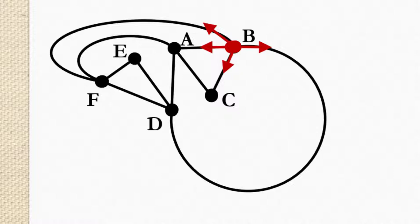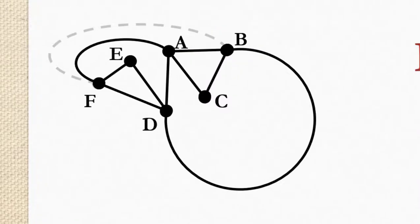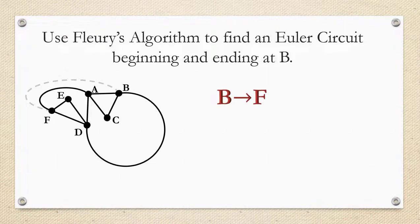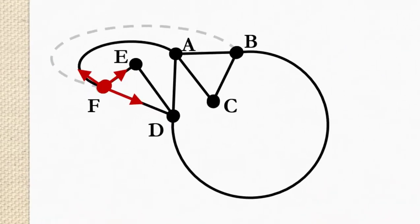So we're going to remove one of those edges just making sure that none of them are cut edges. Well notice if you remove any of those edges it's not going to disconnect the graph. So I'm going to choose BF. Okay so I'm removing BF. I've made a note of it, I've recorded B to F, and now I'm going to start at vertex F and I'm going to see where I'm going to go from there.